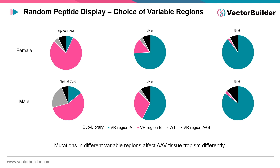The choice of variable region on the AAV capsid also has a large impact on its ability to target different tissues. In this figure, four different sub-libraries were co-injected into mice. Each sub-library consisted of peptides displayed in variable region A, variable region B, or both variable regions A and B. Each sub-library demonstrated different tissue representation when comparing the spinal cord, liver, and brain, indicating that the choice of sub-region will contribute to how successful a given library will perform.